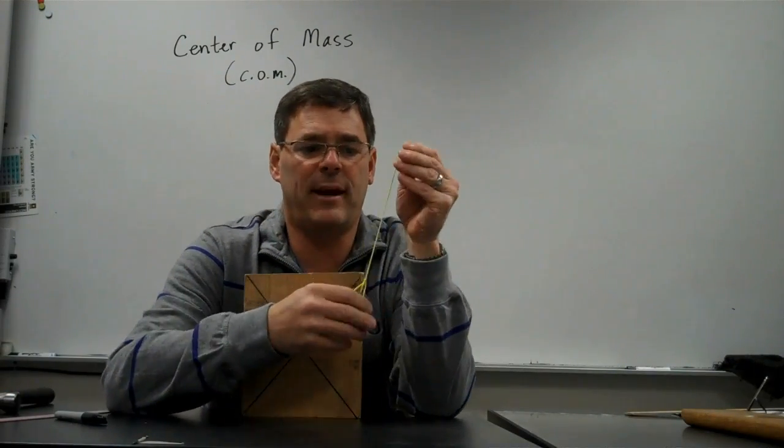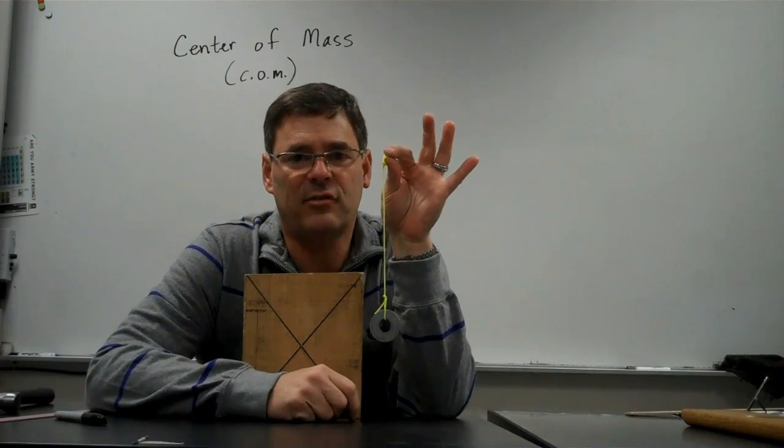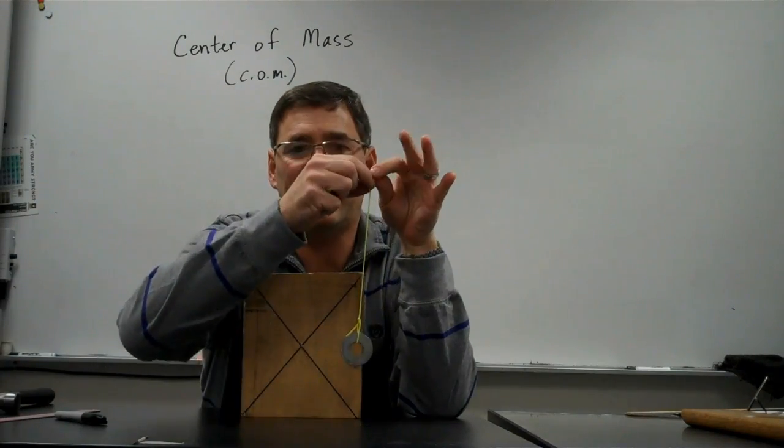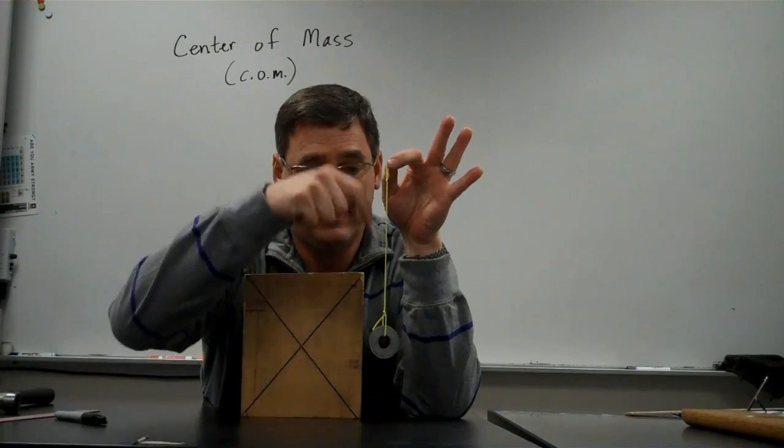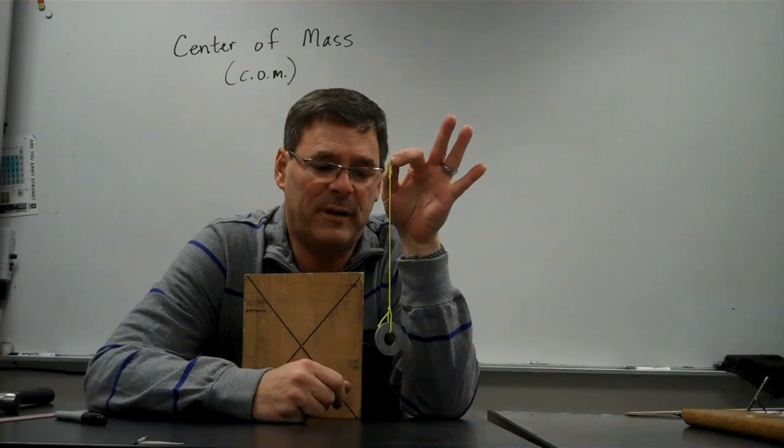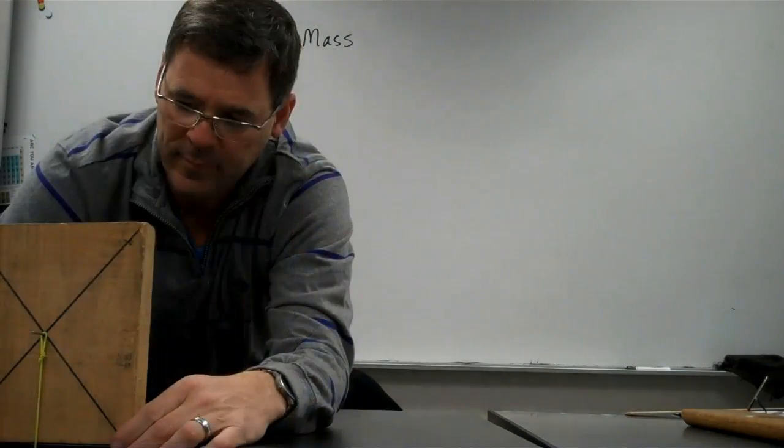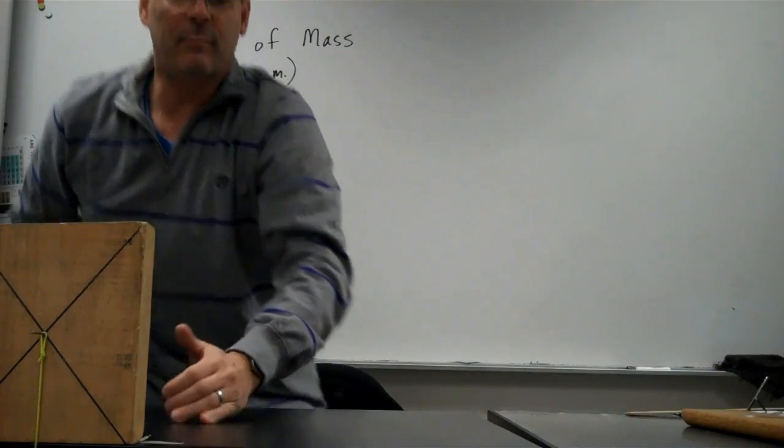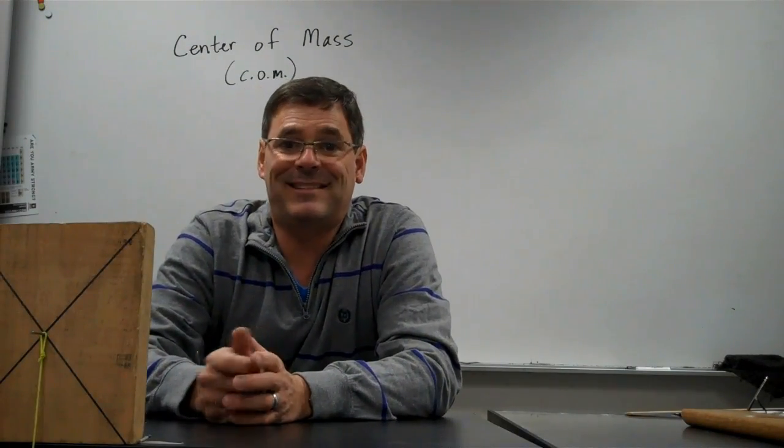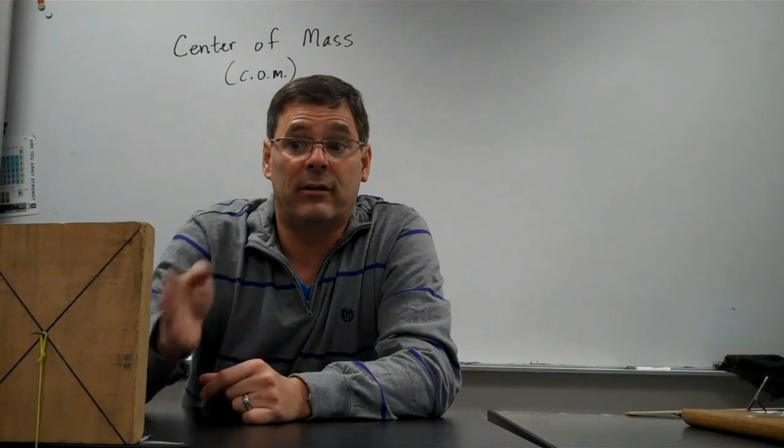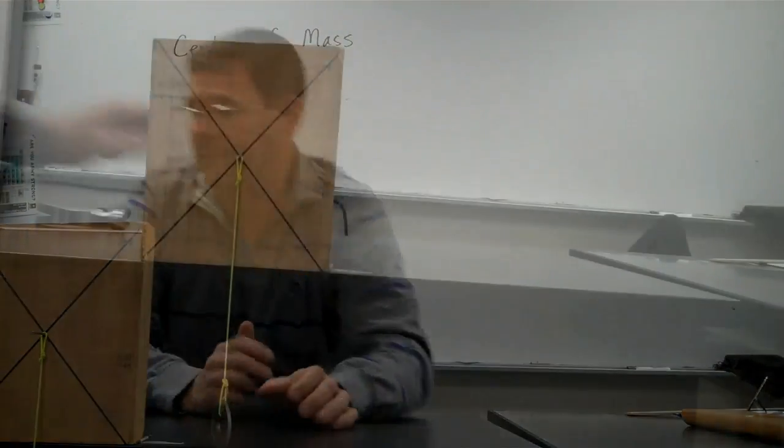Now I'm going to take this string that has a weight on it, this is called a plumb bob. Anything I hang it from, this will hang straight down because of gravity, and that will show me the direction of down. I can see the point about which the center of gravity is directly over, right above that yellow piece of string.